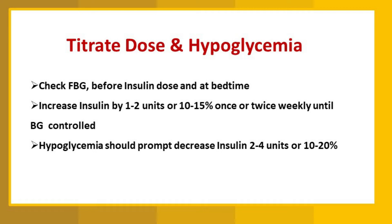The dose can be increased once or twice weekly until blood glucose is at the target range. If the patient has a hypoglycemic event, we decrease the insulin by two to four units, or by 10–20%. In simple terms: follow up after one week, check fasting blood glucose — if not controlled, increase by one to two units; if hypoglycemia occurs, decrease by two to four units from the previously prescribed dose.